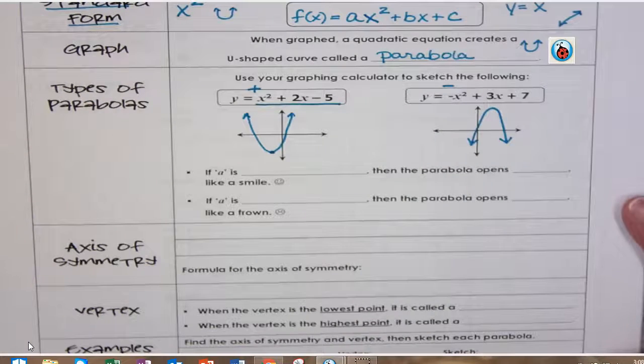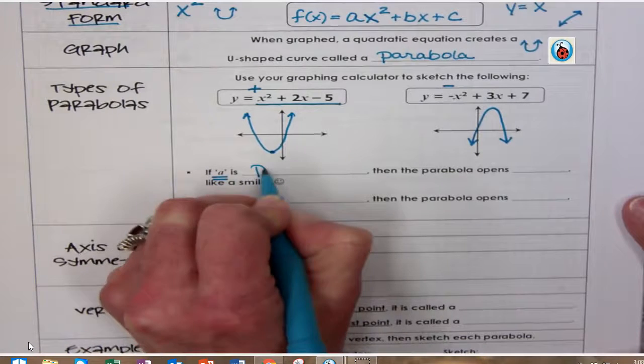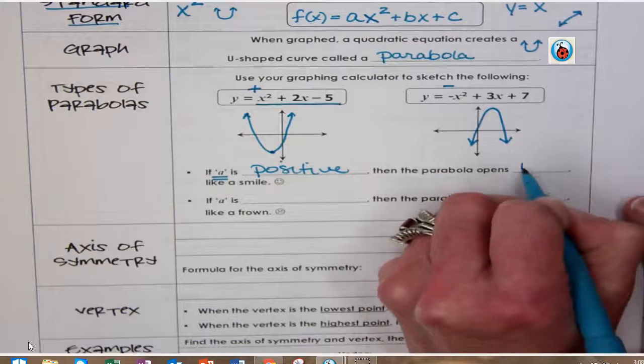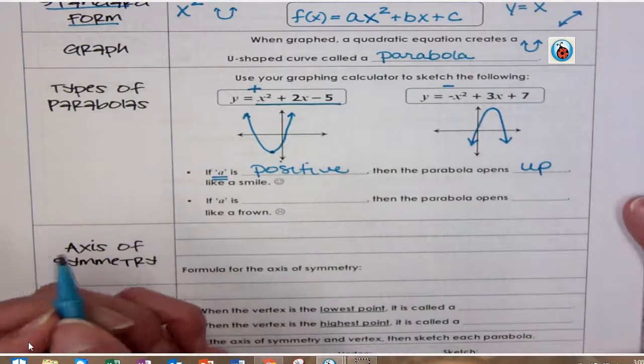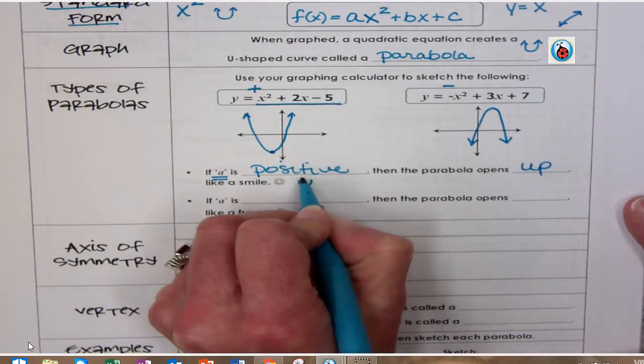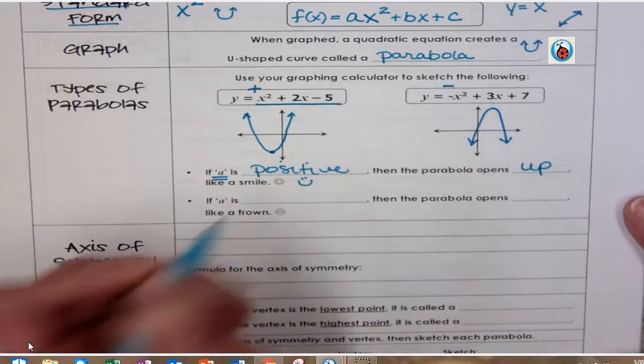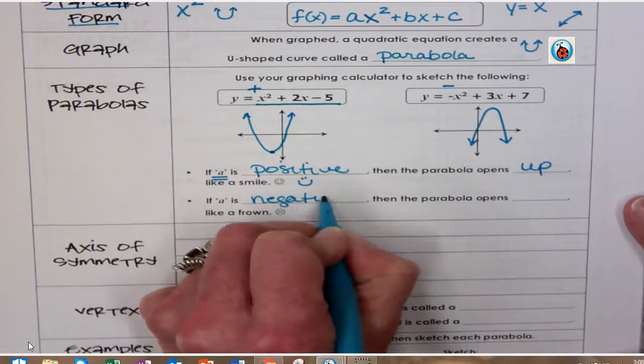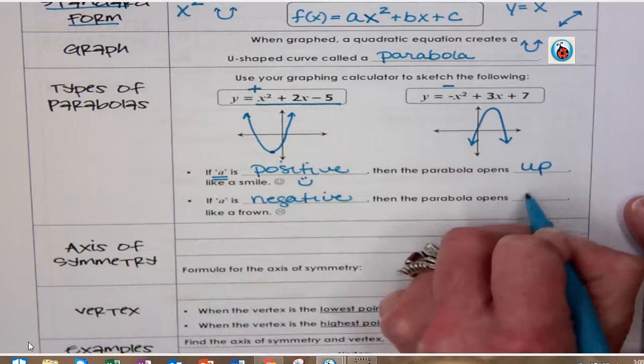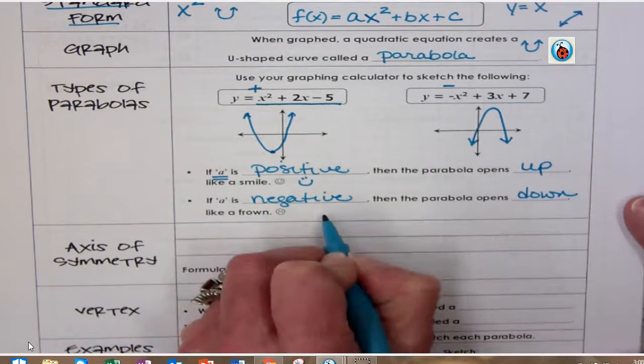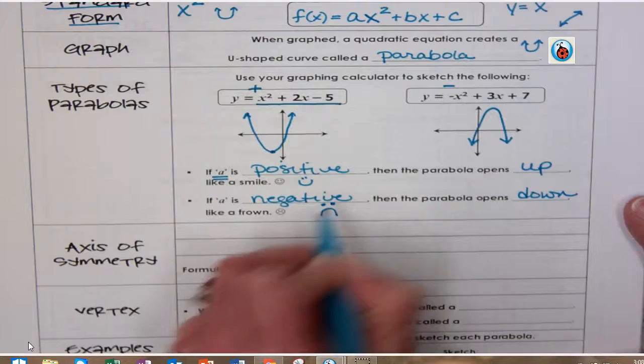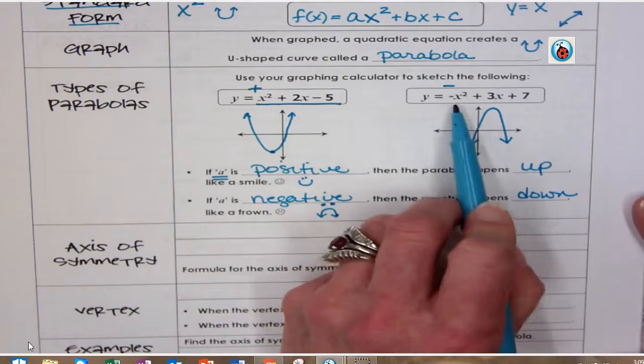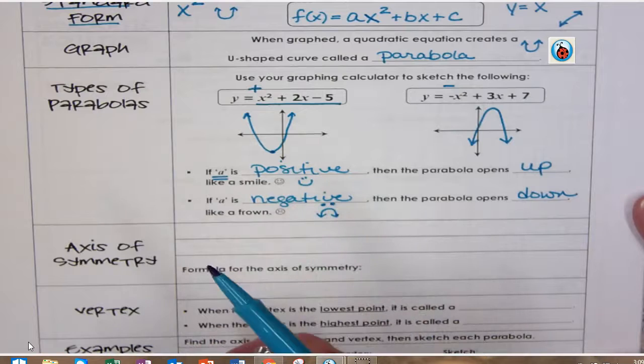So what we notice is that when the a is positive, the graph, the parabola opens, we call this up. And it is like a smile, right? Because it's positive. And when the a is negative, that makes the little parabola sad, and it opens down, and it's like a frown. So this negative makes a big difference in how the graph works.